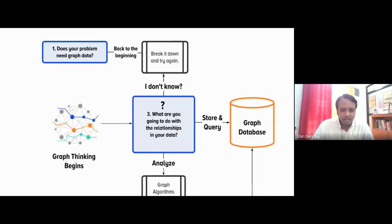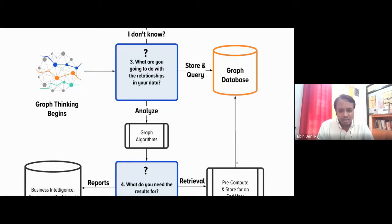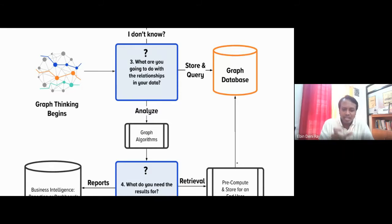If you can confidently answer yes, your path is clear — you can directly apply your graph algorithm. The third question is: what exactly are you going to do with the relationships in this data? In the world of graph technologies there are two main things to do with graph data — either you can analyze it or you can query it. For example, finding mutual connections in an online social network is a query, and its result will be those mutual connections.